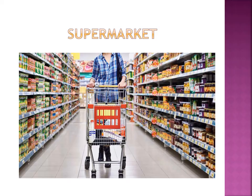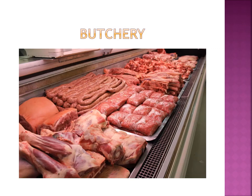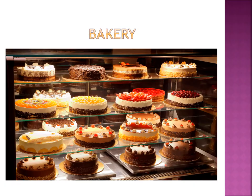First of all, we have supermarket, a place where you can buy groceries. Bank, a place where you can keep your money safe. Drugstore, a place where you can buy medicine. Butchery, a place where you can buy meat. Bakery, a place where you can buy cakes and bread.